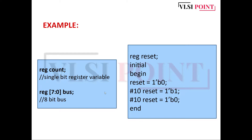If you want to declare a register data type as multiple bits, you write reg, then the size, then the name of the variable. For example, specifying a size makes it represent an 8-bit bus.